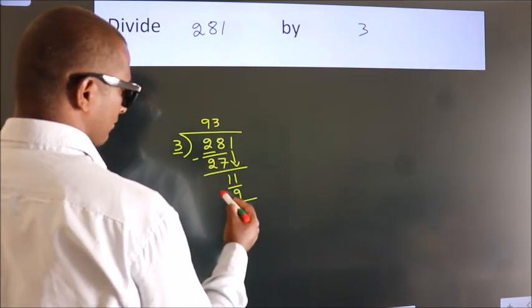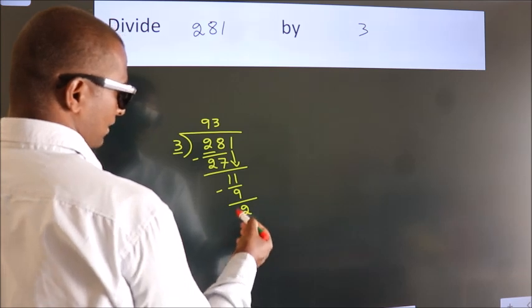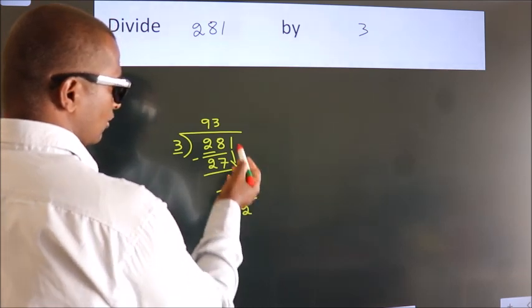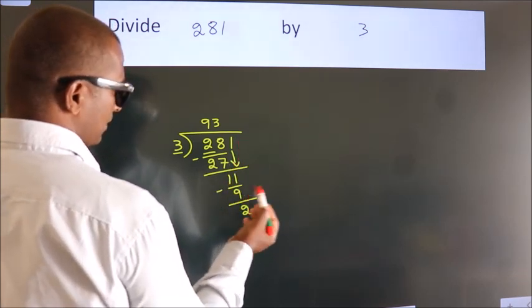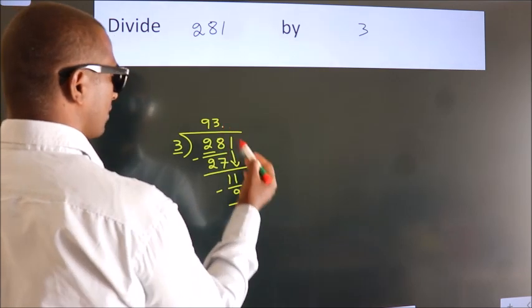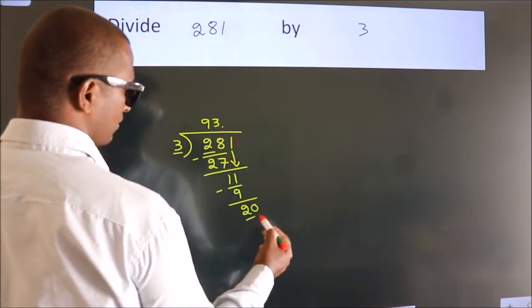Now we subtract. We get 2. After this, no more numbers to bring down, so what we do is we put a dot and take 0. So 20.